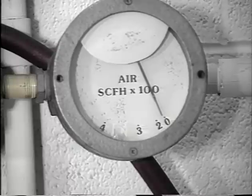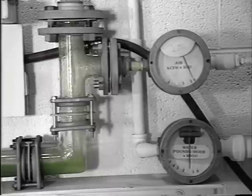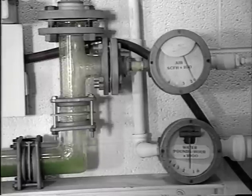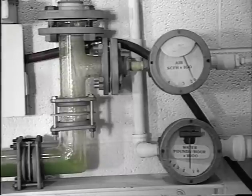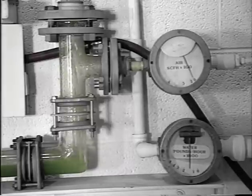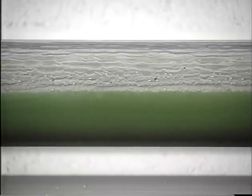One flow meter constantly measures the flow rate of the water. Another flow meter continuously monitors the flow rate of the compressed air. As you can see, we now have fifteen hundred pounds per hour of water flowing in our glass pipe and no compressed air.